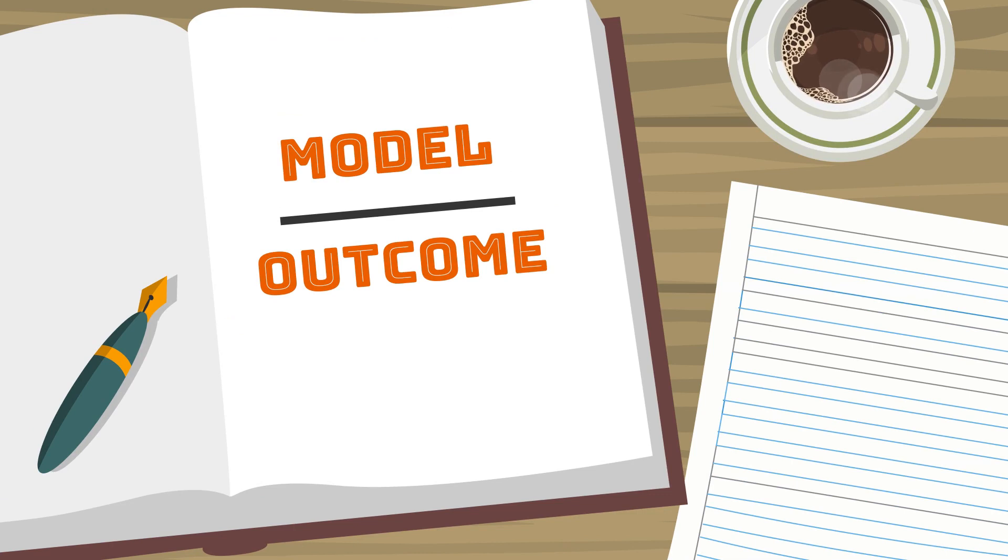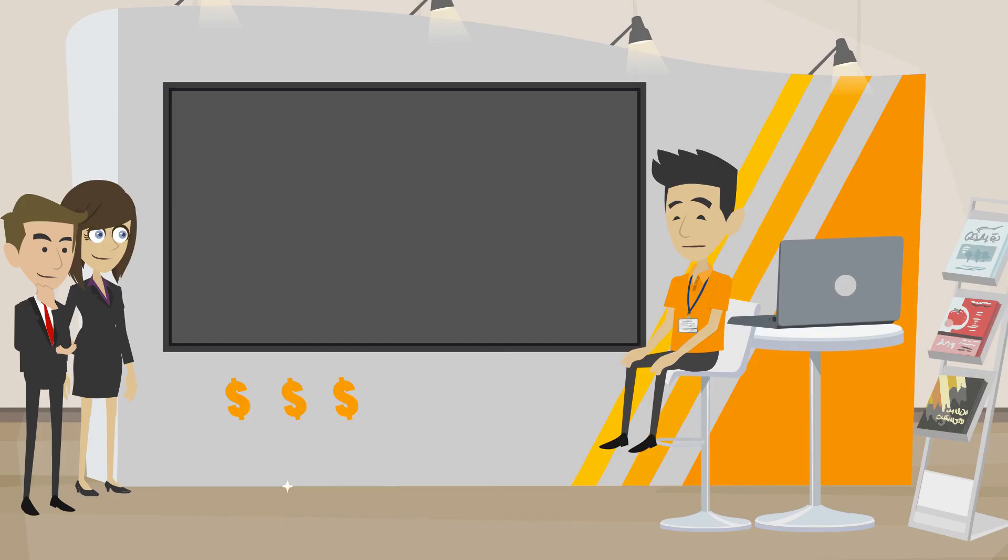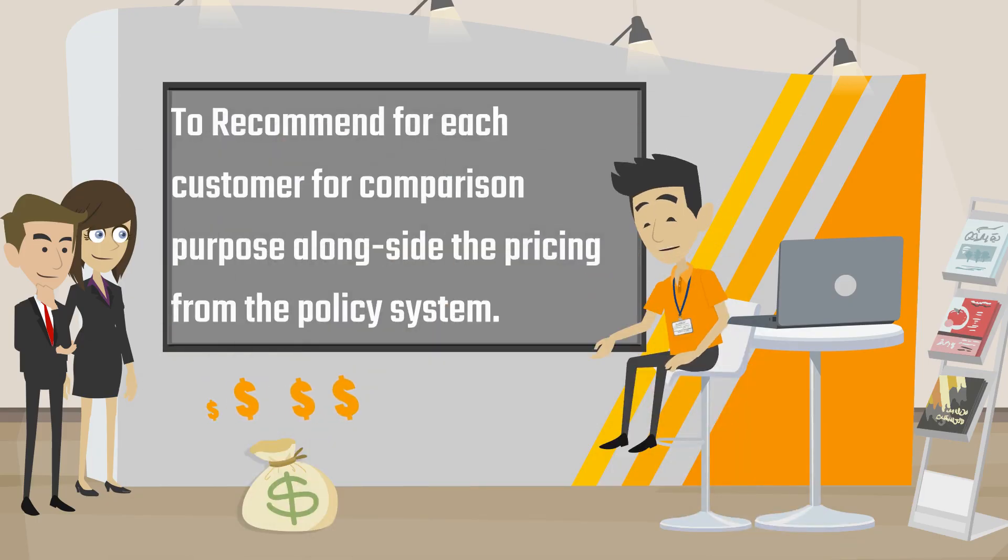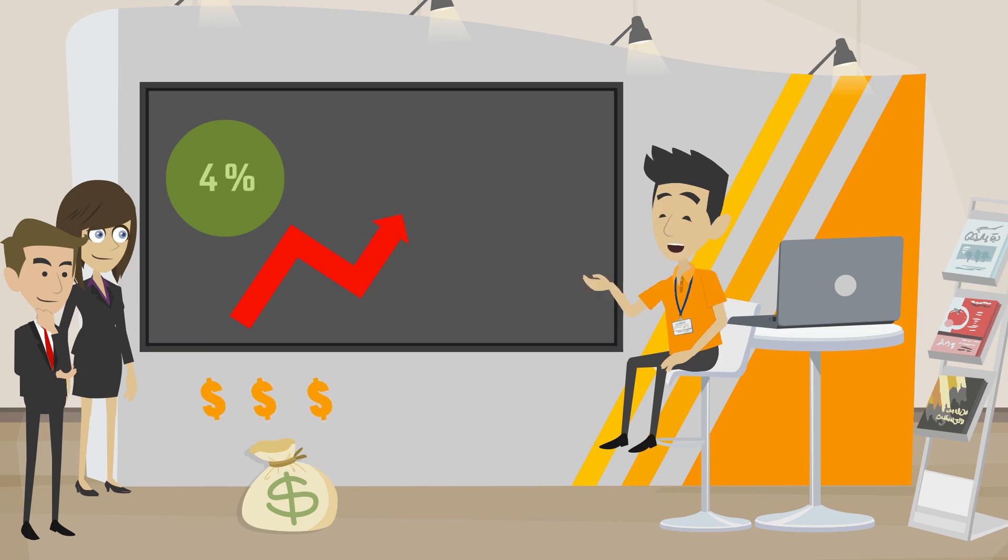Model outcome: the prediction from the model created pricing recommendations for each customer for comparison purpose alongside the pricing from the policy system. The pricing improved the final premium by 4% on average and was still competitive enough to make customers buy policies.